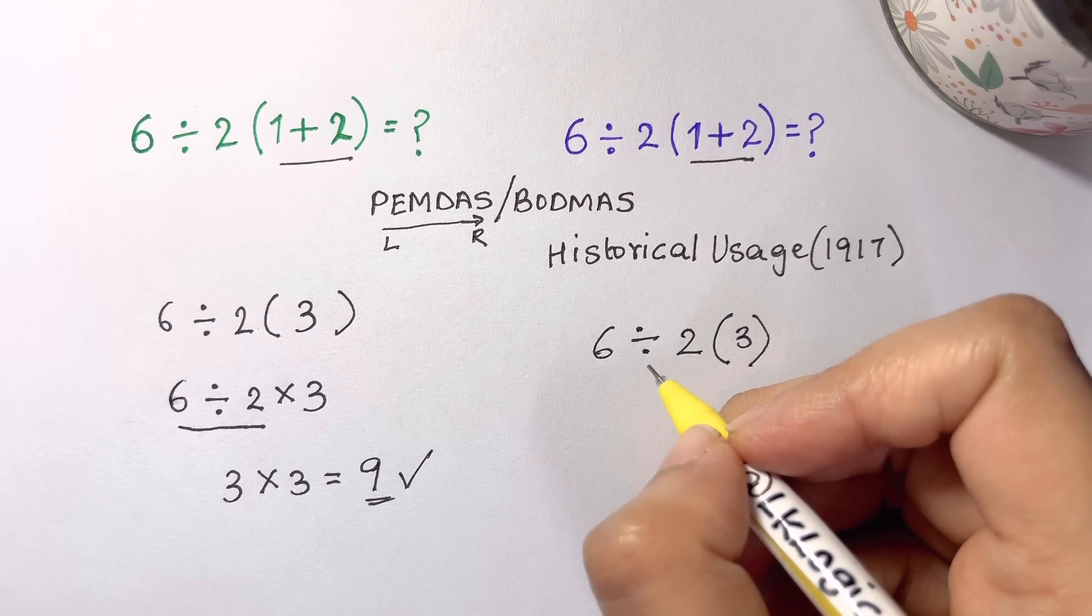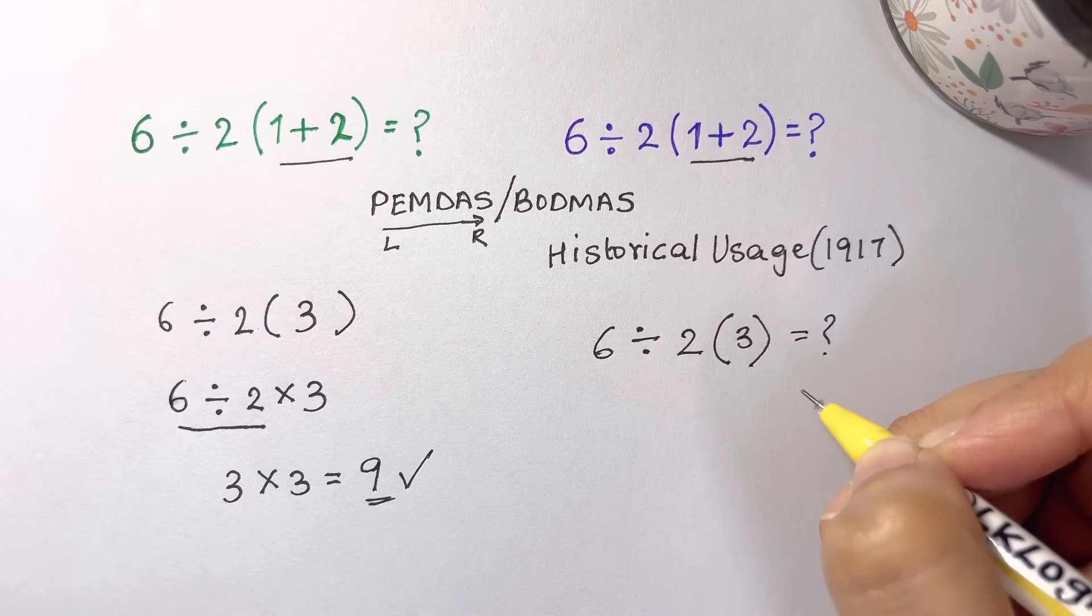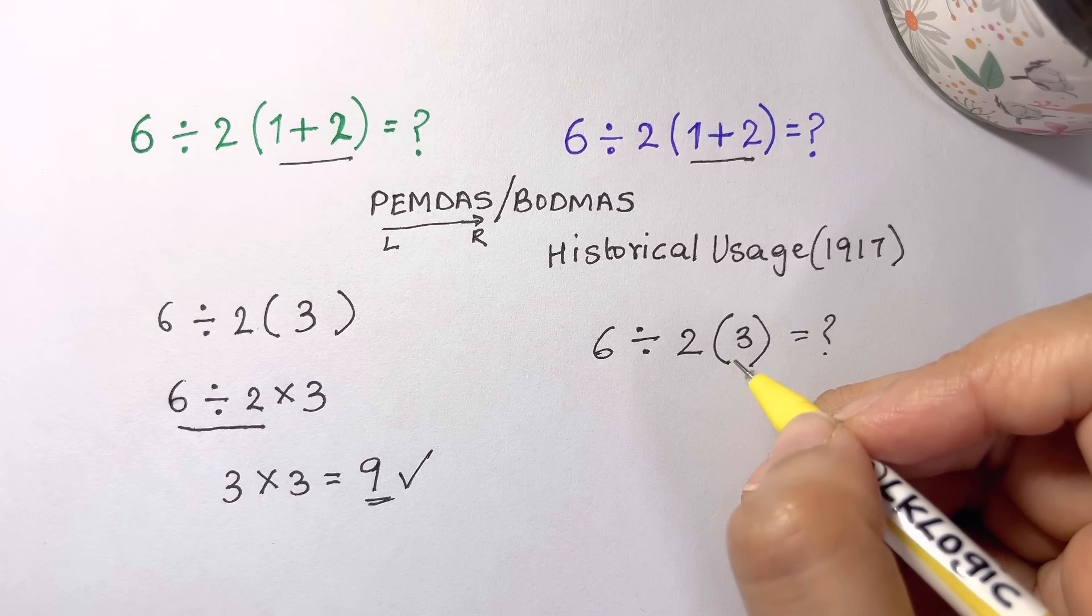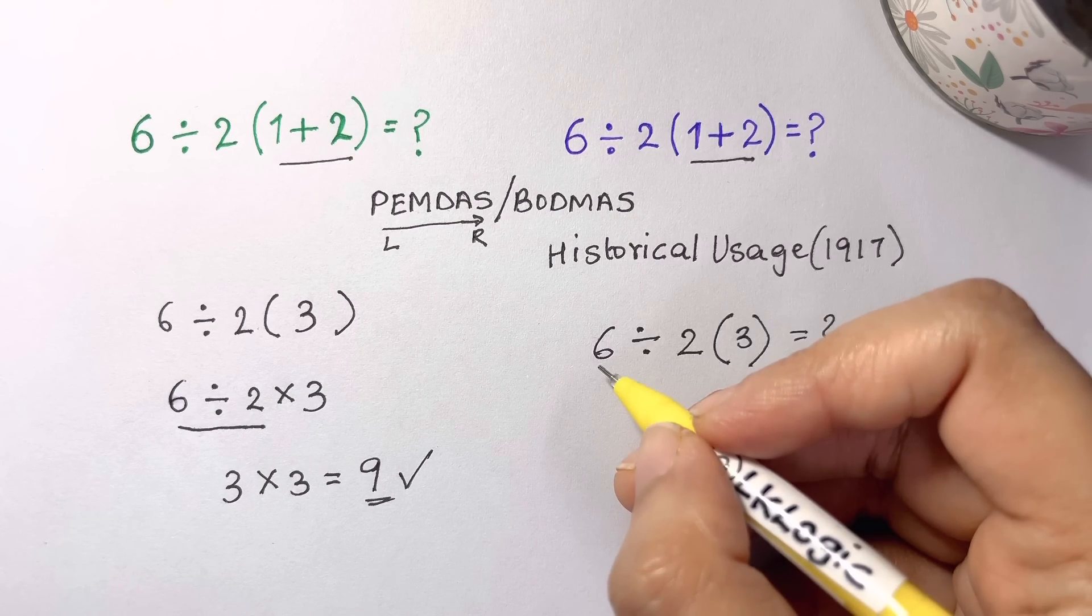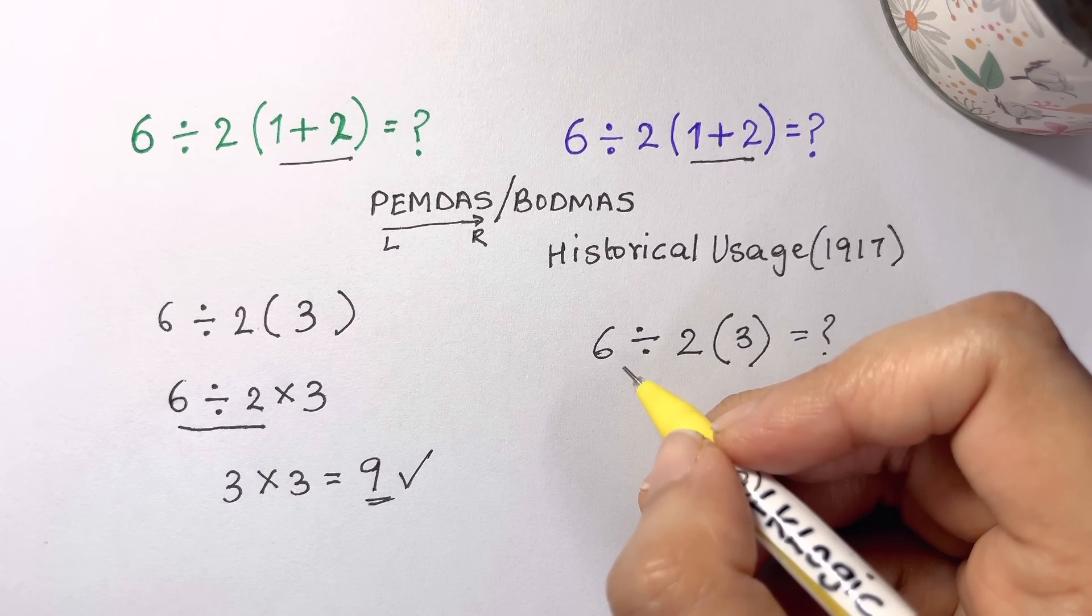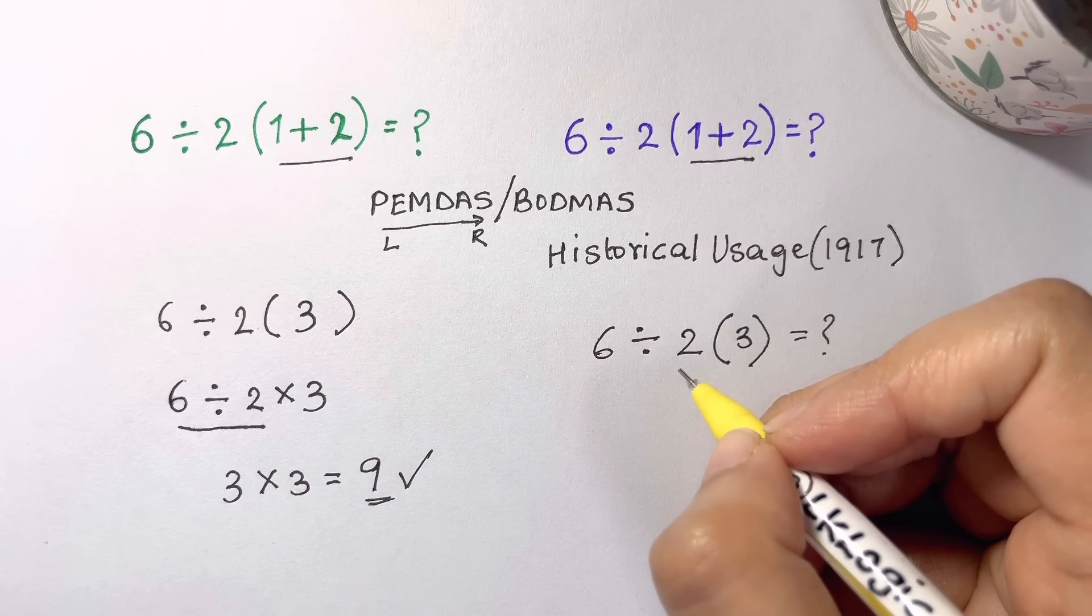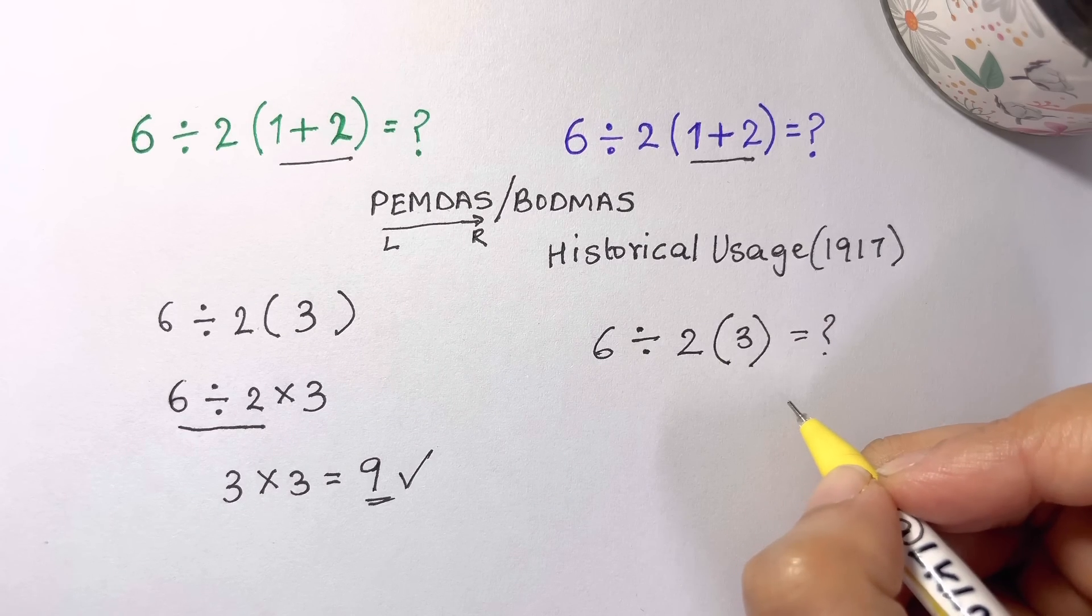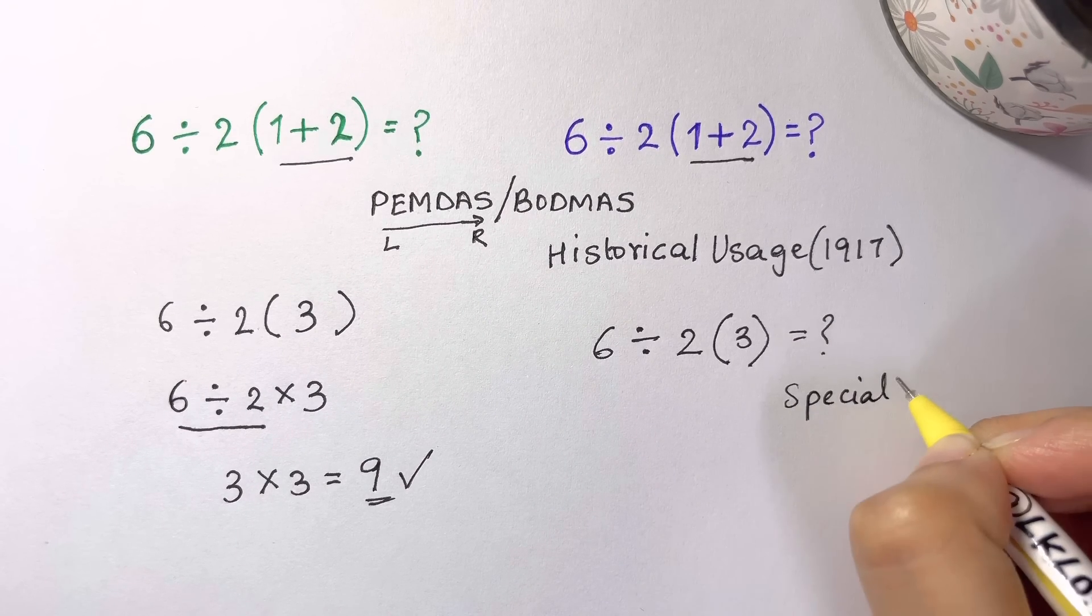So what is six divided by two parenthesis three equal to? Well, there were textbooks with a lot of usage that if you had something on the left divided by something on the right, this was understood to mean that you want to divide the entire product on the left with the entire product on the right. That's a special rule.